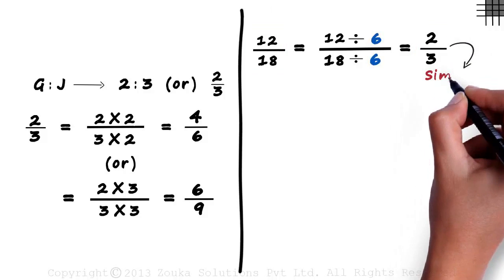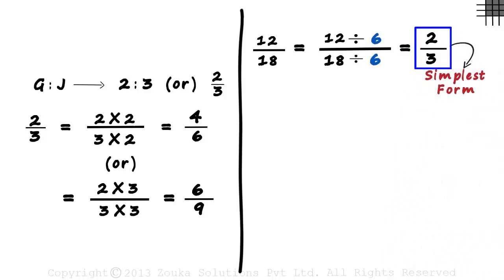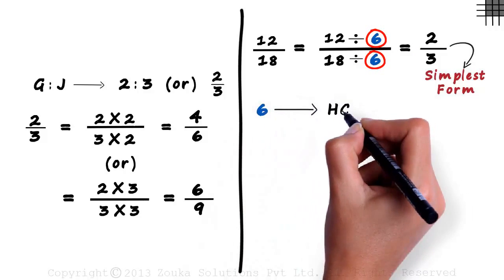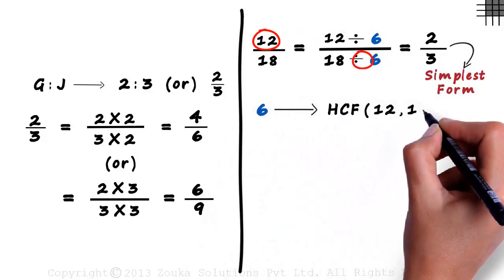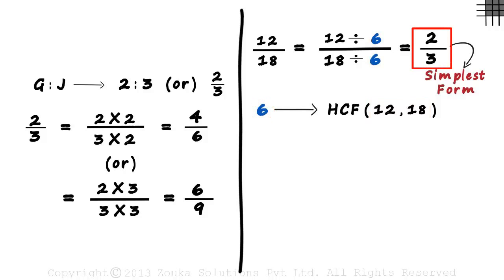2 by 3 is called the simplest form — it means this cannot be reduced further. But how did we know what number we are supposed to divide by? The number 6 is actually the highest common factor of the numerator and the denominator. If we divide the numerator as well as the denominator by their HCF, we get the simplest form.